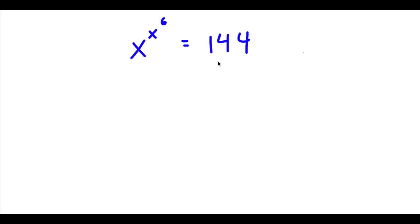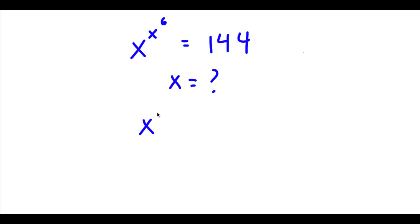Alright, so I have x to the power of x to the power of 6, is equal to 144. Now we want to find the value of x here, so we obviously first start with x to the power of x to the power of 6 is equal to 144.